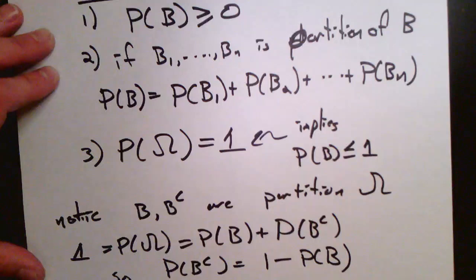And because of that, the probability of b plus the probability of b complement has to equal the probability of omega. Since the probability of omega equals 1, we know that the probability of b plus the probability of b complement equals 1.